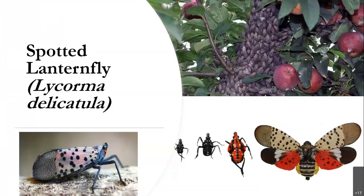Spotted lanternfly, or SLF, is an invasive plant hopper native to Asia. It was unintentionally introduced in 2014 in Pennsylvania in a shipment of rocks from Asia. SLF feeds on the sap of more than 70 plant species including crops, vineyards, nuts, fruit trees, and maples, and is a significant threat to agricultural and tourist industries with over 350 million dollars in grape and apple yields at risk. The appearance of SLF changes depending on its life cycle stage: nymphs in instars one through three are black with white spots, then turn red with black spots before becoming adults with colorful wings resembling a moth. SLFs are most often seen with wings closed and swarm in large groups on host plants.